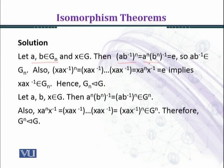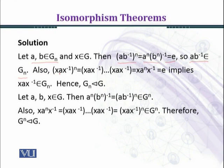So it equals e, which implies that ab^{-1} belongs to G_n. Therefore G_n is a subgroup of G. Now we want to prove that it is a normal subgroup of G. To prove this, we need to show that x·a·x^{-1} belongs to G_n for every x belonging to G and a belonging to G_n.